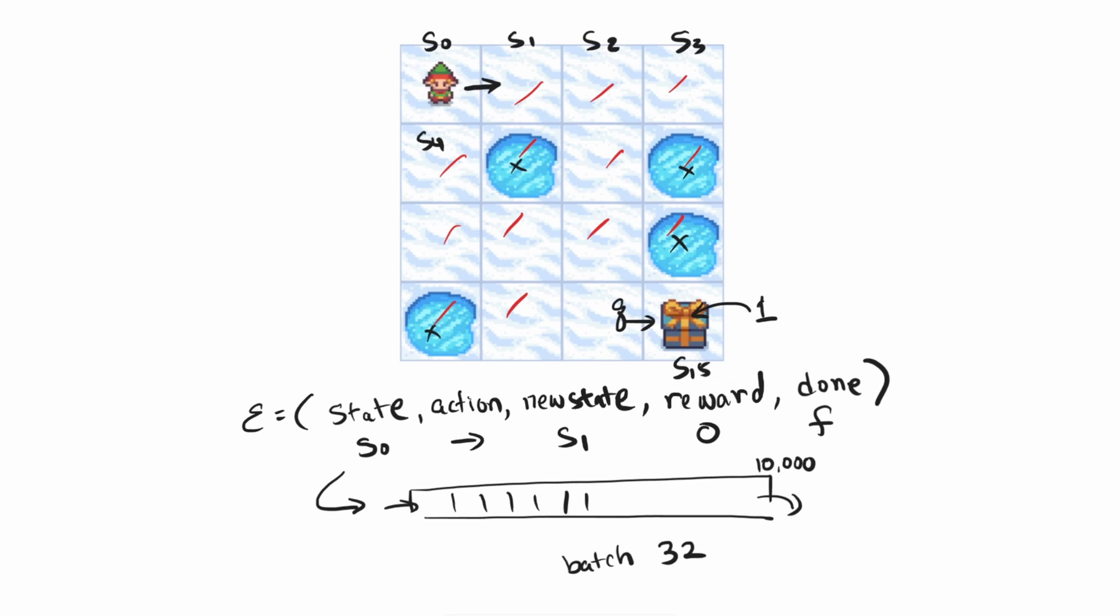Wouldn't it be nice if we can put priorities around experiences that improve the model earlier? That way we're not wasting our time training on nothing. Okay, now let's see how Prioritized Experience Replay works.